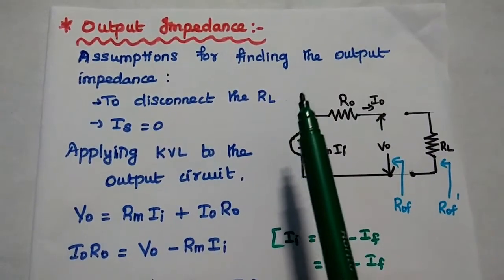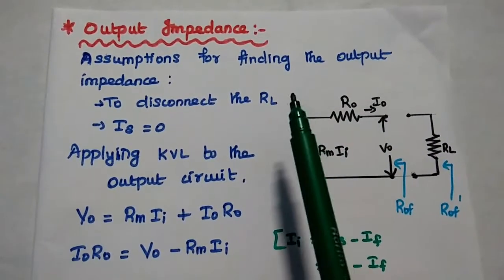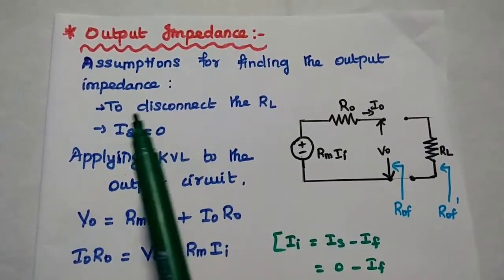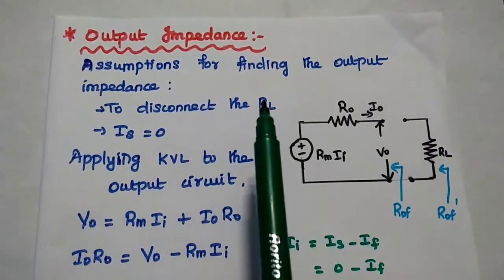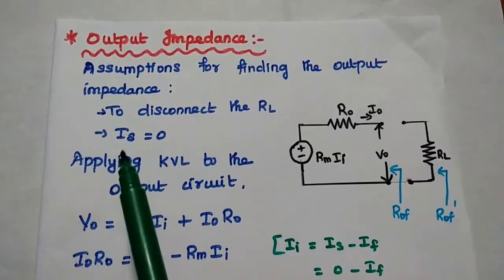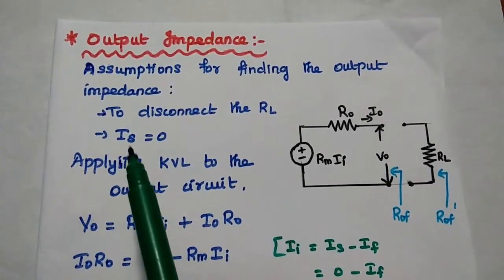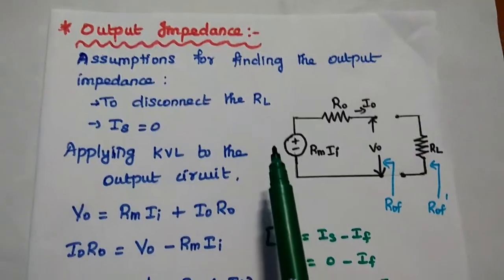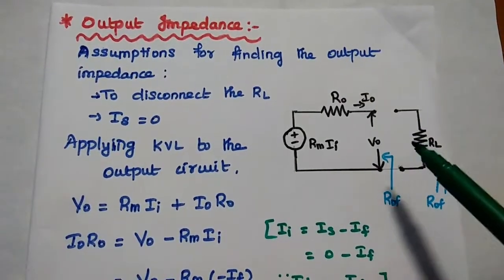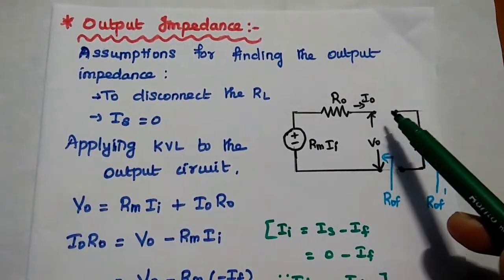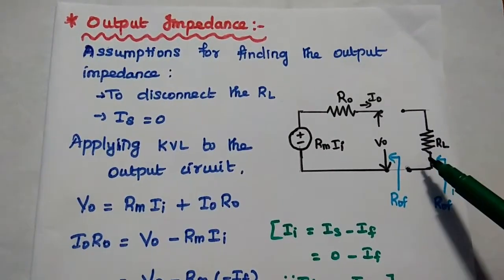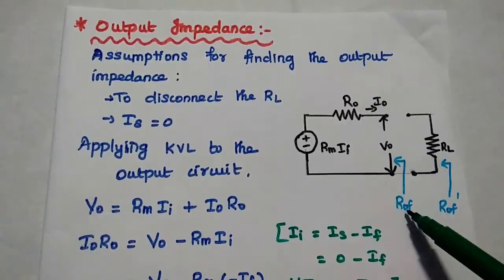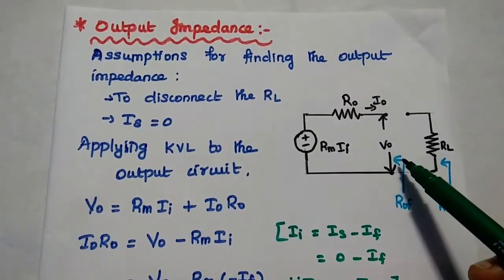Next is the output impedance. To find the output impedance, we make two assumptions: first, disconnect the load resistance RL; second, assume the source current IS equals zero. We are going to find the output impedance with feedback ROF at the output terminal.